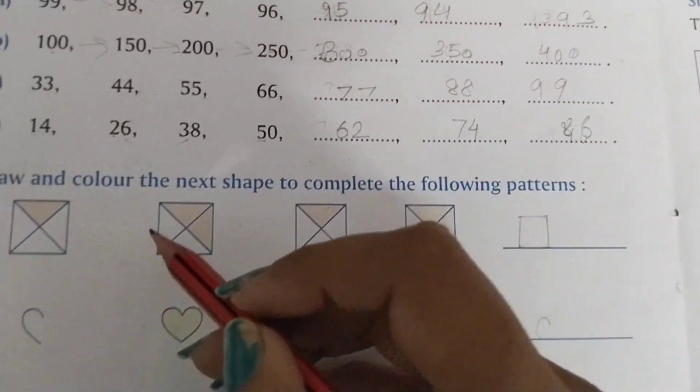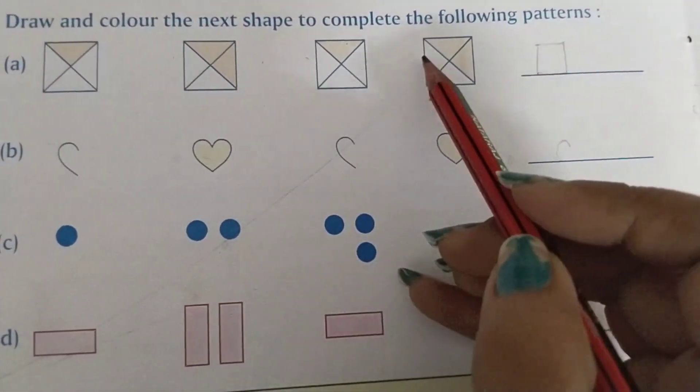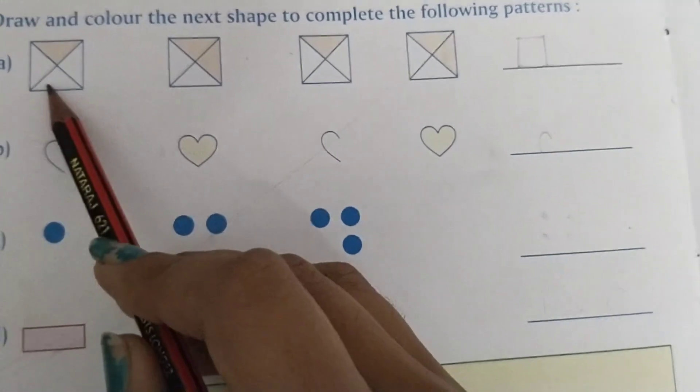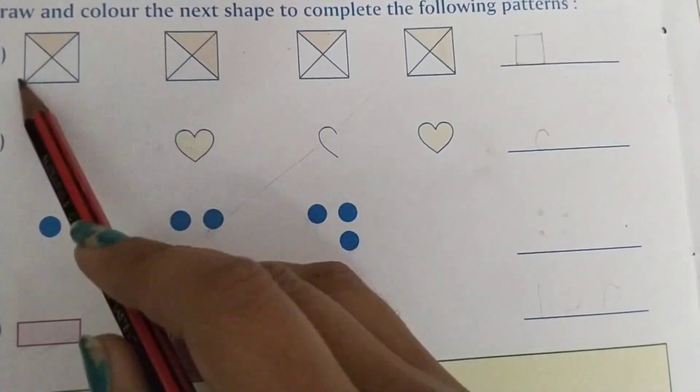Next we have draw and color the next shape to complete the following pattern. Here is a square and four triangles are given in the single square.